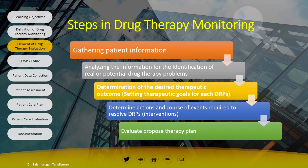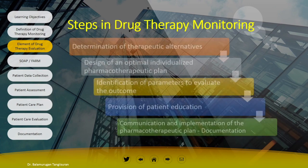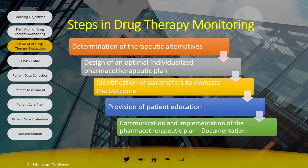Once you set the goals, you can determine the action and course of intervention. After determining the intervention, we have to evaluate the proposed therapy plan. We can come up with one intervention and then evaluate it. To recap: identify DRP, set therapeutic goals, determine the action to be taken, then evaluate the proposed therapeutic plan. Once evaluated, you must also determine therapeutic alternatives — we should be one step ahead. If the proposed therapy plan doesn't work, we should have an alternative therapeutic plan.